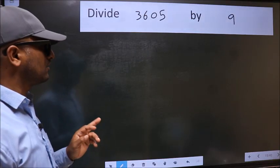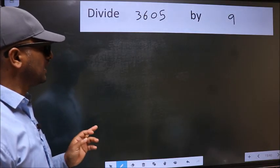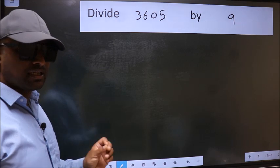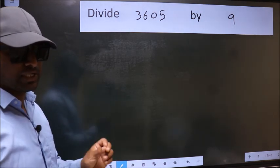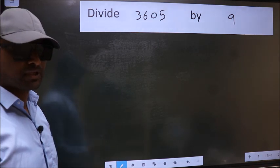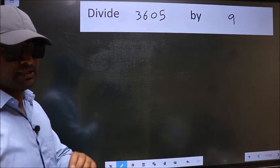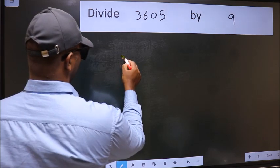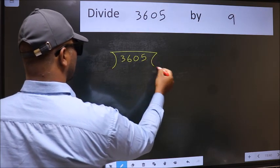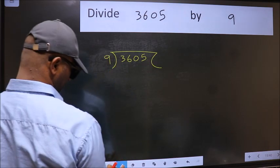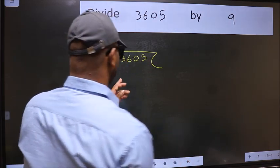Divide 3605 by 9. While doing this division, many do a mistake. What is the mistake that they do? I will let you know, but before that we should frame it in this way: 3605 and 9. Here, this is your step 1.